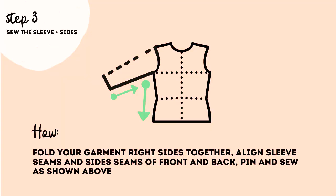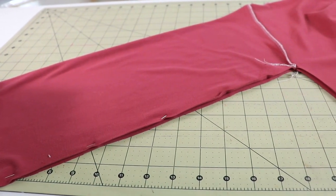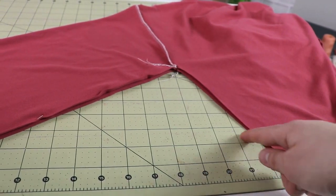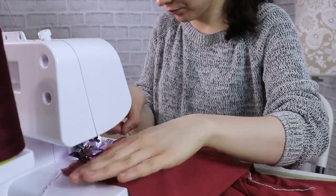For the third step, we're going to sew the side seam and sleeve all in one go. For that, you will need to fold your garment right sides together, align the sleeve seams and side seams on front and back, and then pin it and sew it together.